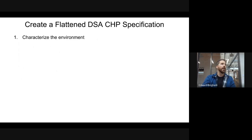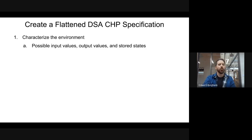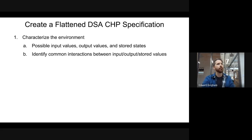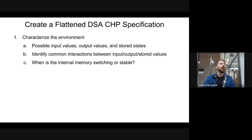We need to think about the environment of just this process: what are its possible input values, what are its possible output values, and what values does it need to store? What are the common interactions between all three of those things? How can we tie together the encodings of those three in ways that common interactions line up in our event space, so that common interactions have cheaper encodings overall? And when is our internal memory switching versus stable? Because that determines what we can do with our four drivers or our input enable.